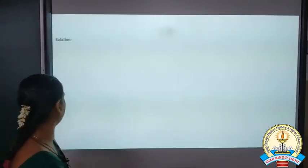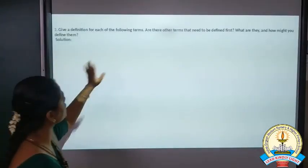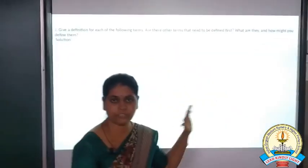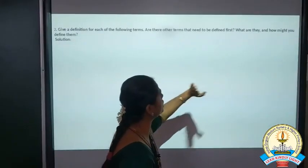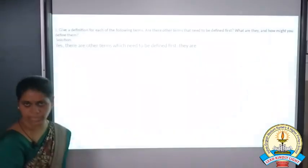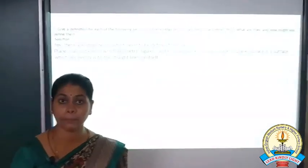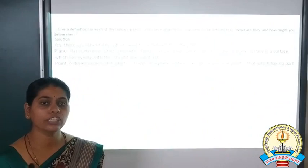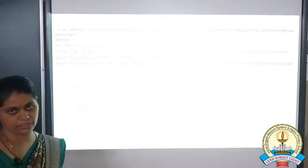Now let us go to the next question, that is the second question. Give a definition for each of the following terms. Some terms are given and for each we have to write the definition. Before that, other terms are needed to be defined first. We have to define parallel lines, intersecting lines, or perpendicular lines, but to define these, first of all we have to define some other terms.